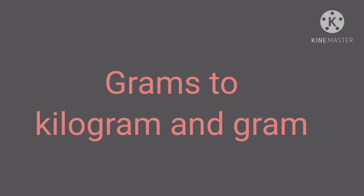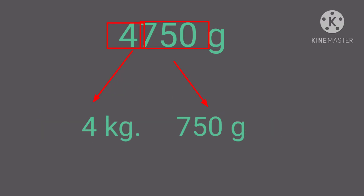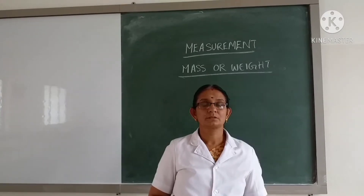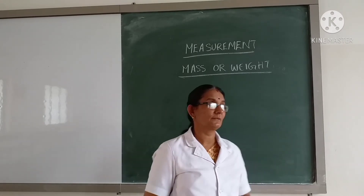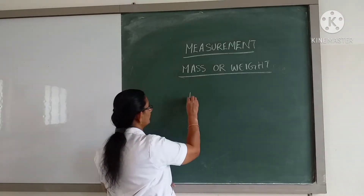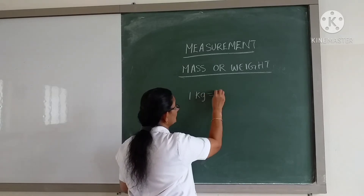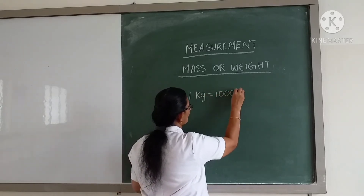Now let us see how to convert grams into kilograms and grams in a simpler way. Consider 4750 grams. The last three digits, 750, are written as grams and the remaining digit, 4, is written as kilograms. So we have 4 kilograms and 750 grams. We know that 1 kilogram equals 1000 grams.